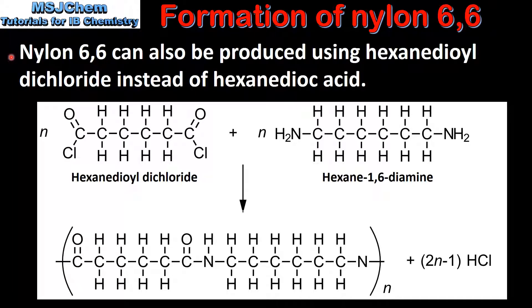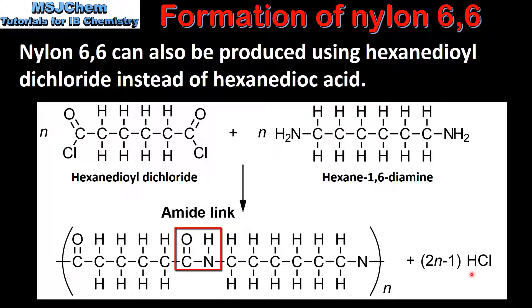Nylon-6-6 can also be produced using hexanedioyl dichloride instead of hexanedioic acid. Here we can see the full structural formula of hexanedioyl dichloride. In the reaction a chlorine atom on the hexanedioyl dichloride molecule reacts with a hydrogen atom on the amine group of the diamine. This produces a molecule of hydrogen chloride and a covalent bond between the carbon and nitrogen atoms, which is known as an amide link.